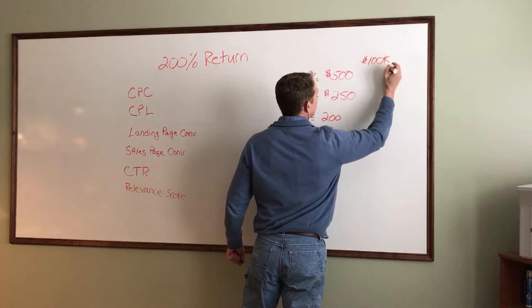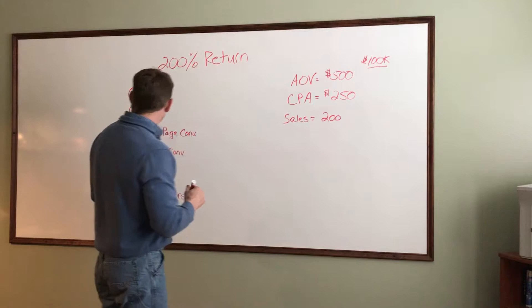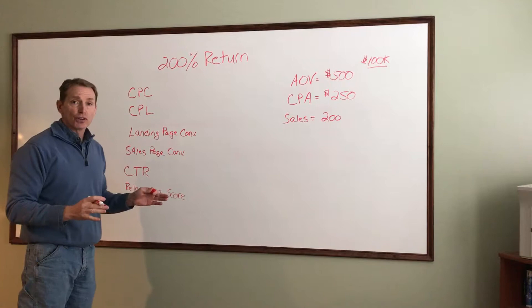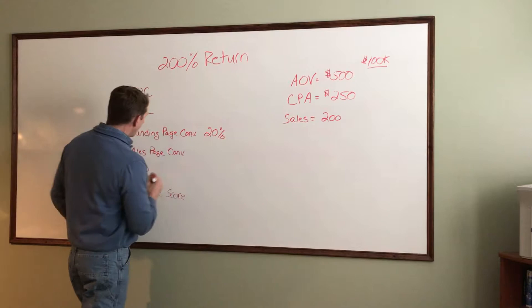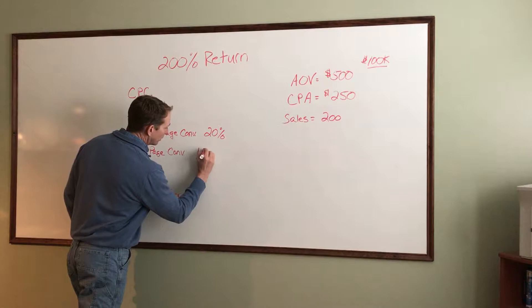To figure this out, we're going to work with worst case scenario numbers. Worst case scenario for landing page conversion rate is going to be 20%. Worst case scenario for sales page conversion rate is going to be 1%. Worst case relevance score is five.